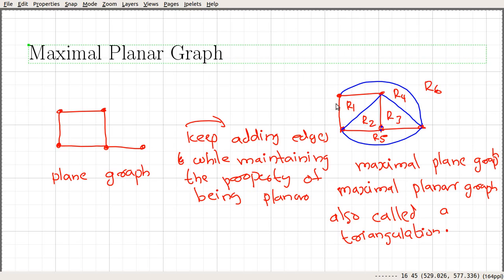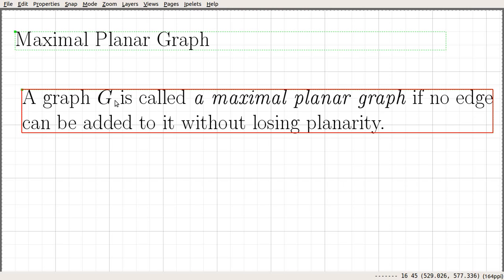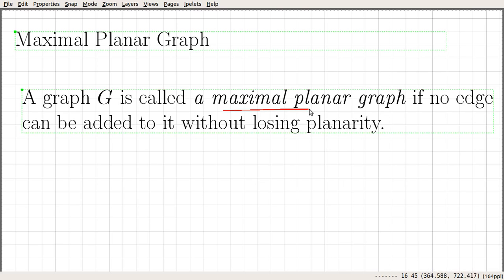So this kind of graph — a planar graph in which no more edges can be added without breaking planarity — is called a maximal planar graph. This is an example of a maximal planar graph. Another important thing to notice is that each region is bounded by a triangle, and it is called a triangulation of a graph. So, a graph is called a maximal planar graph if no edge can be added to it without losing its planarity.